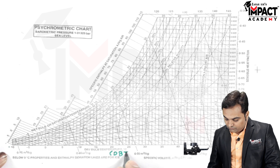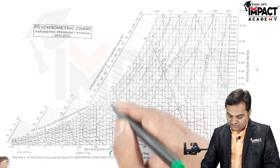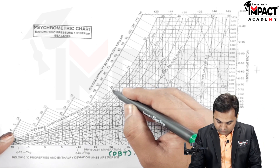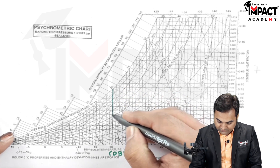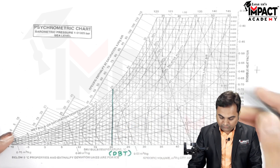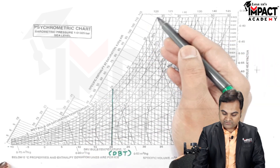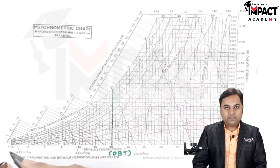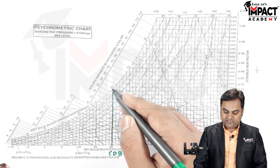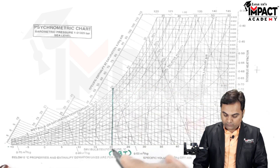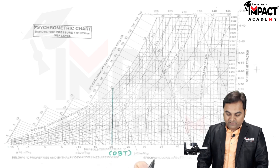When we want to plot a dry bulb temperature — for example, 20 degrees Celsius — we plot a vertical line upward. There is also a curve called the saturation curve. When the dry bulb temperature line is projected up to the saturation curve, the temperature at that intersection point is called the dew point temperature. After the dry bulb temperature, we have the wet bulb temperature.